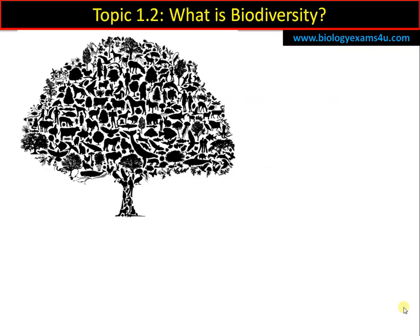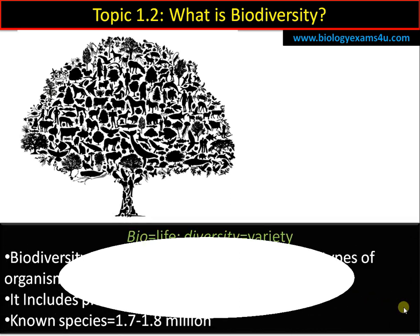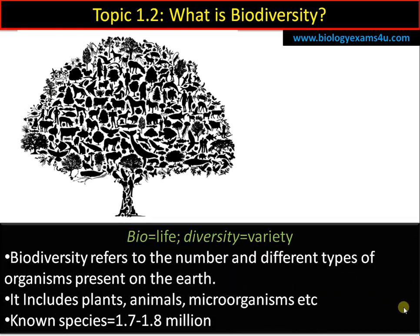Starting with: what is biodiversity? Let us break down that term — 'bio' means life and 'diversity' means variety. Biodiversity simply refers to the number and variety of different types of organisms present on Earth. That includes all living organisms: plants, animals, microorganisms — everything. Known species are approximately 1.7 to 1.8 million as per recent studies.